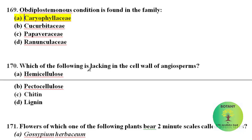Which of the following is lacking in the cell wall of angiosperms? Hemicellulose is present, pectocellulose is present, lignin is present, but chitin is absent from angiosperm cell walls.